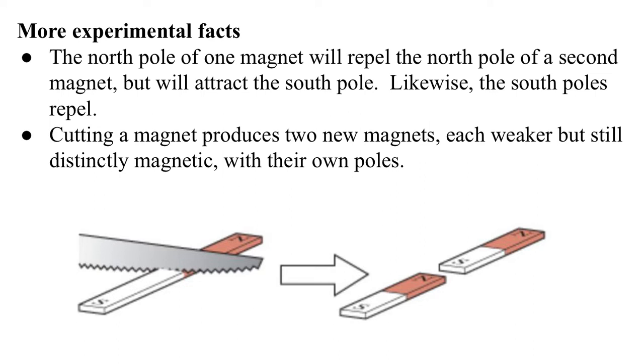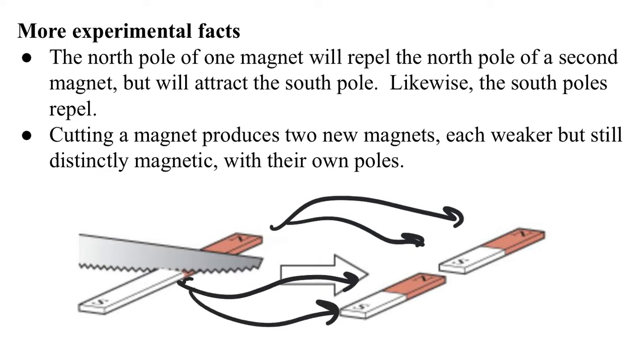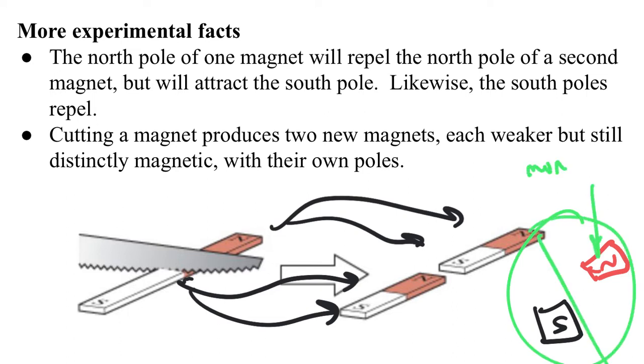In other words, and this is important, we get north and south pole, and this becomes a north and south pole. We don't get a pure north pole and a pure south pole. These things never happen. This is what would be called a monopole and they don't seem to exist.